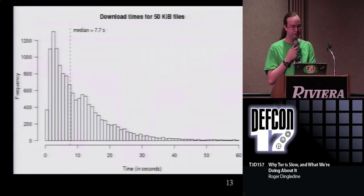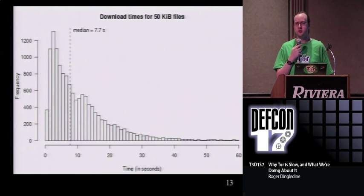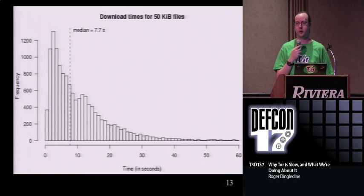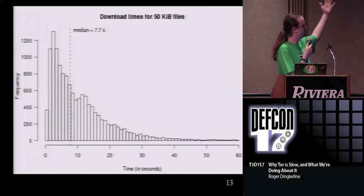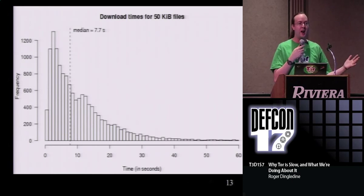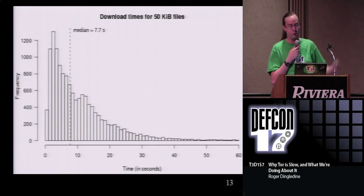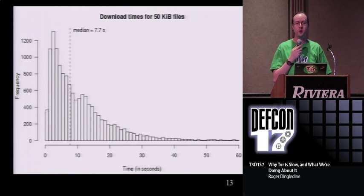So there are a couple of interesting things to point out. We pulled down a 50 kilobyte file through Tor 13,000 times over the past two months, and now we've got a histogram of what sort of download times we actually got. On average, it took about eight seconds to get our 50 kilobyte file - that's kind of like loading a big news story off a website. Eight seconds - that kind of sucks. And it's worse than that, because look at that huge tail - it goes down to like 20 or 30 seconds.